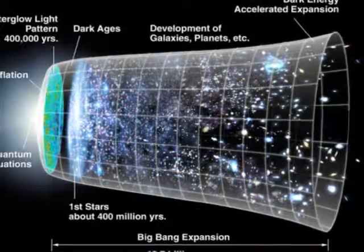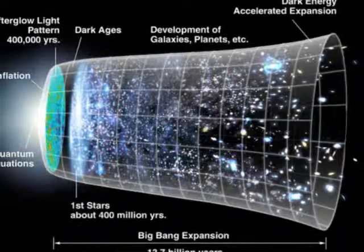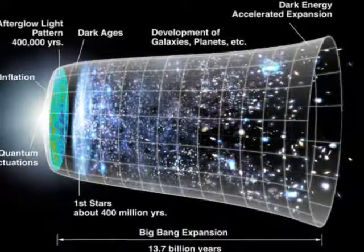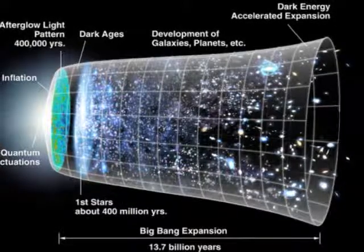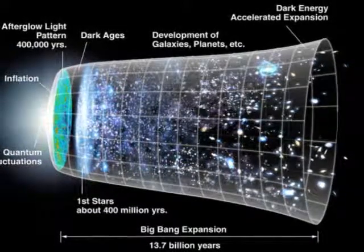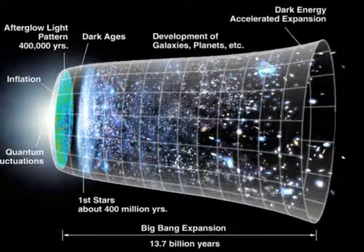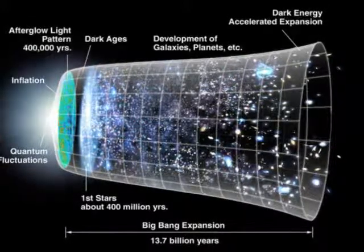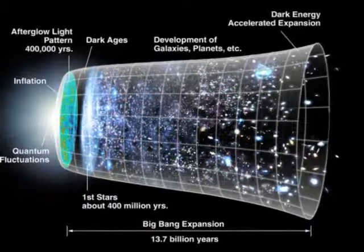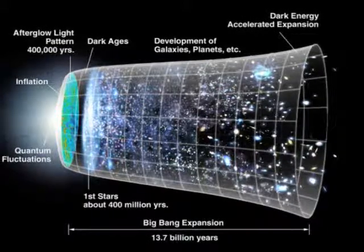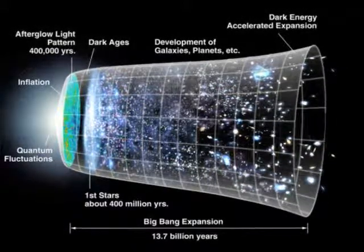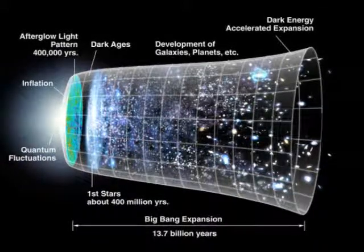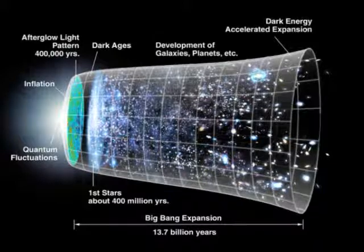Therefore, at the time of the Big Bang, condition one above is satisfied, and everything in the universe must be regarded as constituting a whole that is not reducible to the sum of its parts. Furthermore, since there is nothing external to the universe, there is nothing that could break this wholeness. And so condition three can never be satisfied. Hence, according to condition two, this wholeness must persist even after the parts of the universe have become spatially separated.